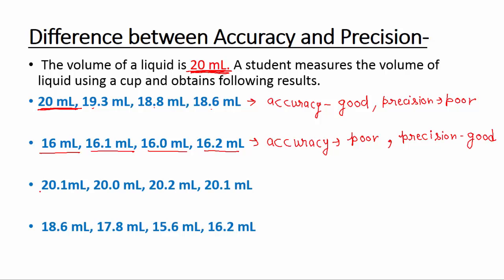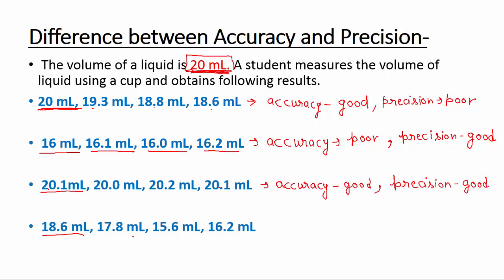In the third set — 18.6 ml, 17.8 ml, 15.6 ml, and 16.2 ml — the values are not close to each other, so precision is poor. They are also not close to the actual value of 20 ml, so accuracy is also poor. Both accuracy and precision are poor here.